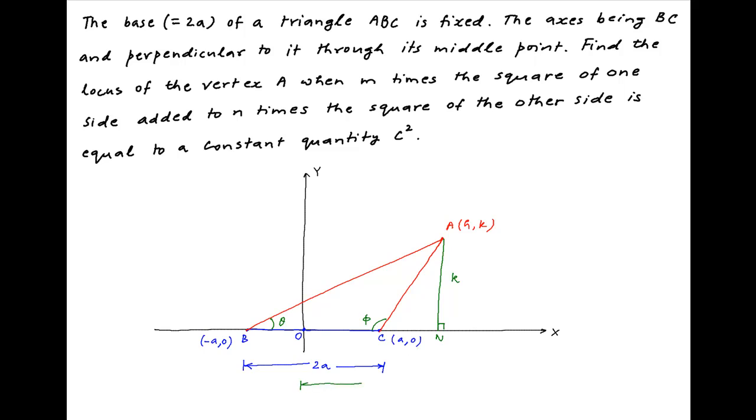The vertical distance of point A from the x-axis is k and the horizontal distance of point A from the y-axis is equal to h. Therefore, distance CN is equal to h minus a. Also, because the coordinates of point B are (-a, 0), therefore the distance OB is equal to a.